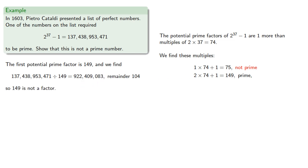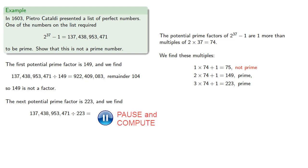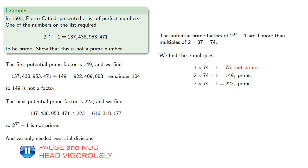Since there's a remainder, 149 is not a factor. But 3 times 74 + 1 = 223, which is also prime, and our next potential prime factor is 223. Since this number is divisible by 223, we know that 2^37 - 1 is not prime. Here's the important thing: we only needed two trial divisions. That means we have a way of avoiding these lengthy computations that Fermat didn't want to engage in.